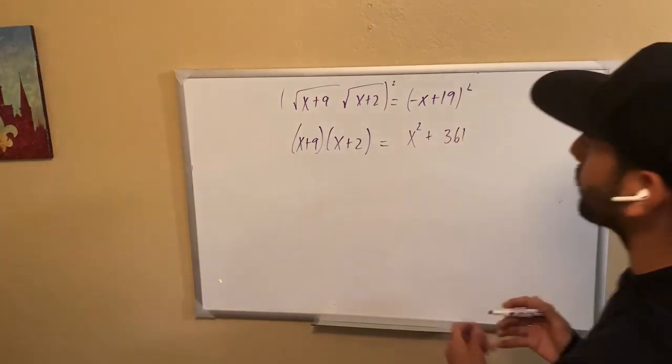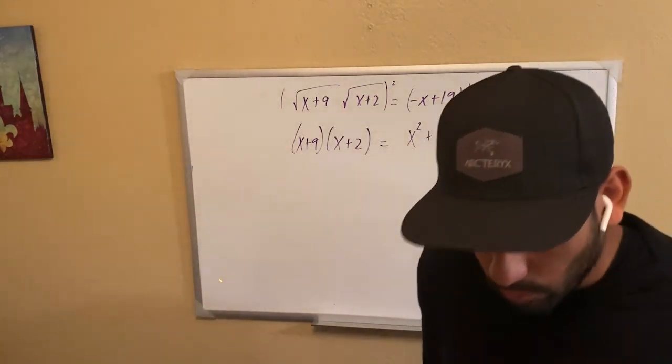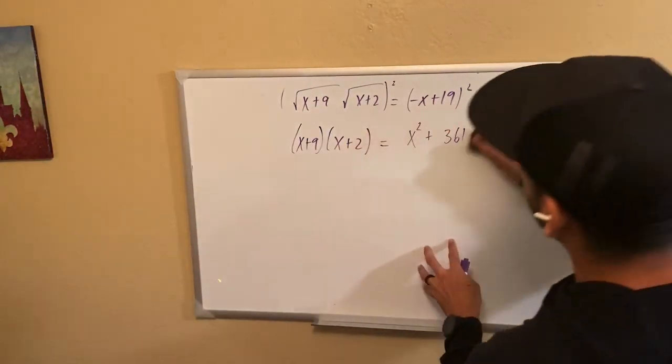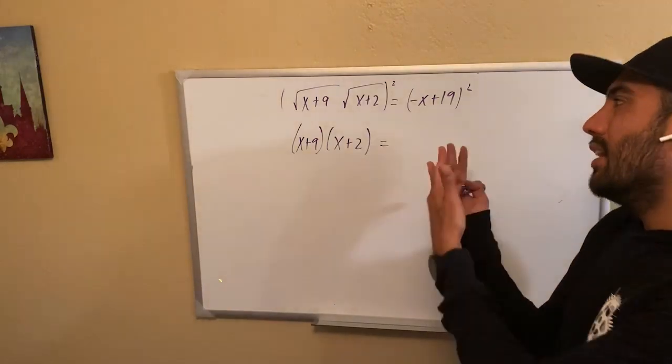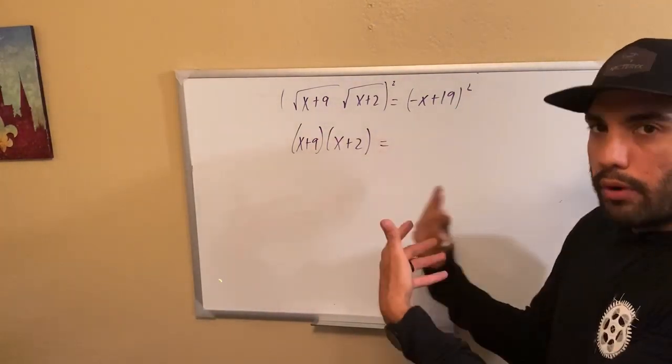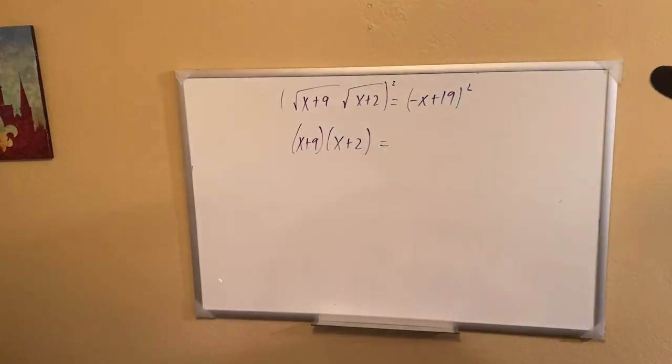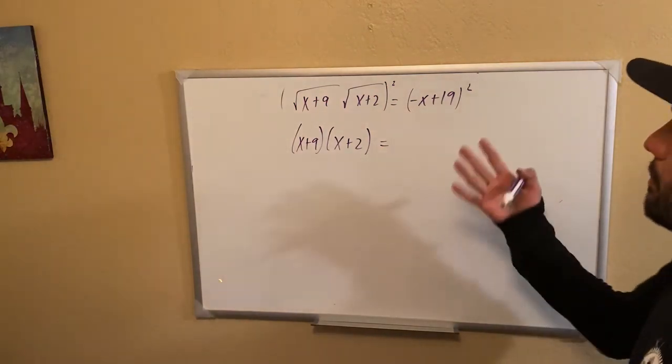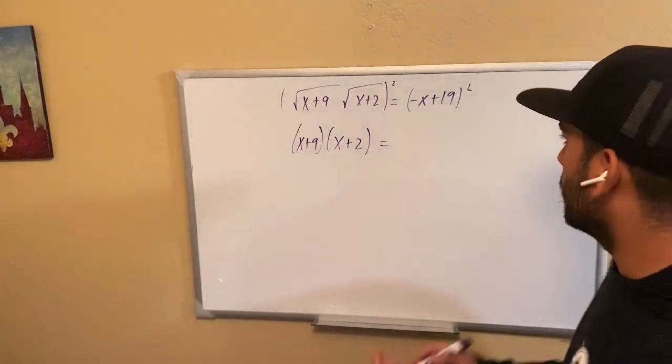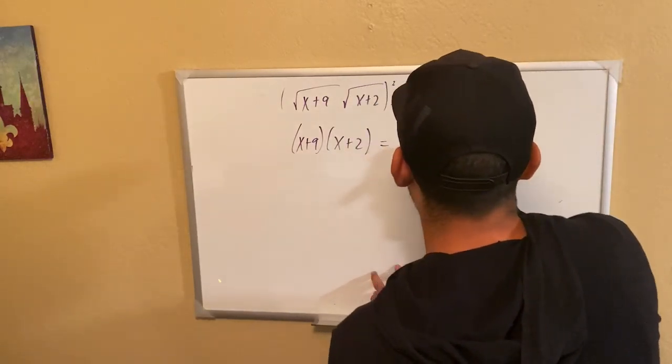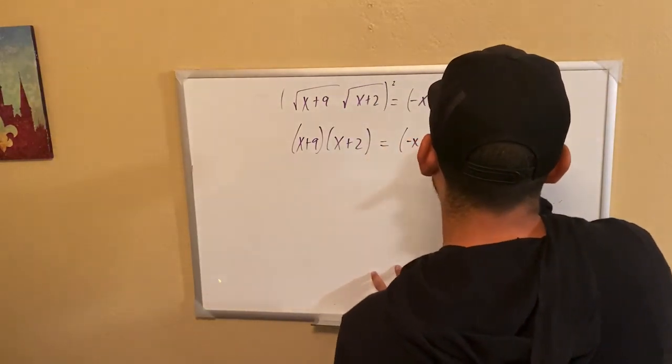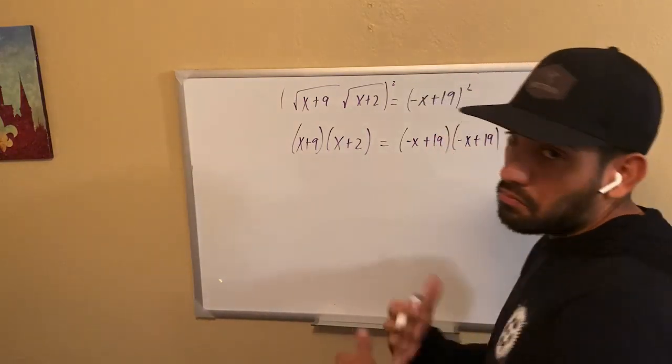Again, why? Because we have two values multiplying and subtracting together. Again, this just becomes natural once you continue to practice your math, your algebra essentially. But it's just a rule that we have to know. Okay, there's a couple explanations that I can go with, but it'll take a while to do. Maybe another YouTube video that I can do, who knows.